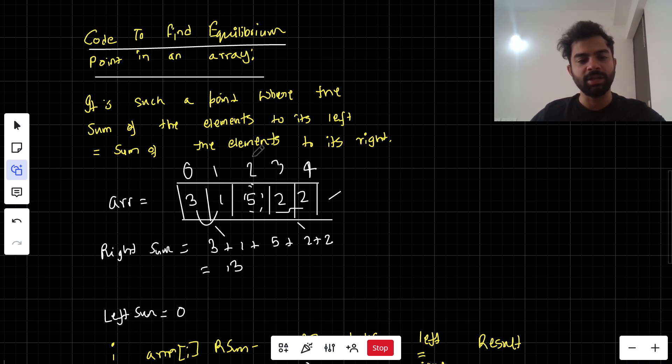First we do a right sum, which is all the elements of the array sum. 3 plus 1 plus 5, so we'll get a total sum as 13.